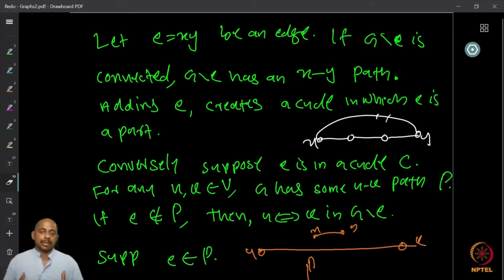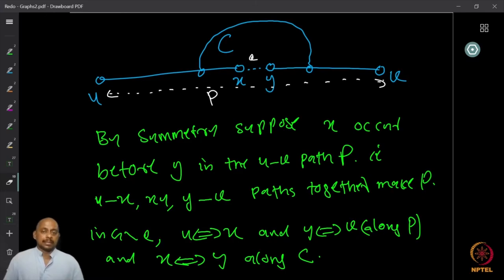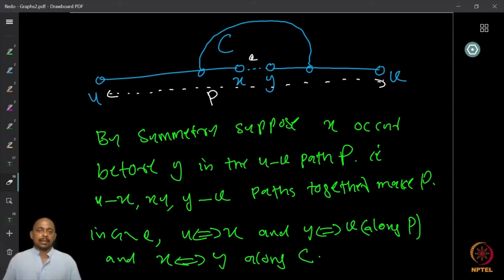Now suppose E is part of the path P. Then the U-V path must go through edge E, say from U to X, then the edge XY, then Y to V — or by symmetry, we can assume X appears before Y in the path. With this assumption, there is a sub-path from U to X, then the edge XY, then Y to V.